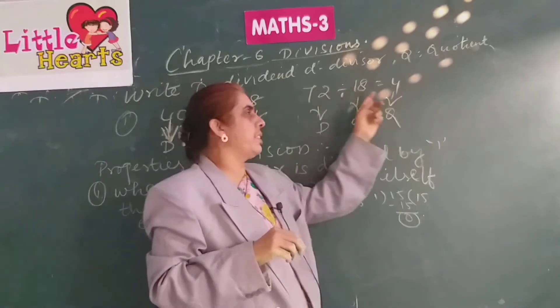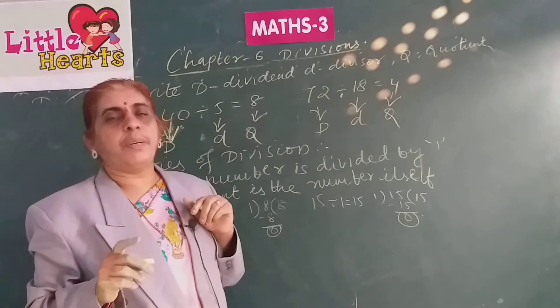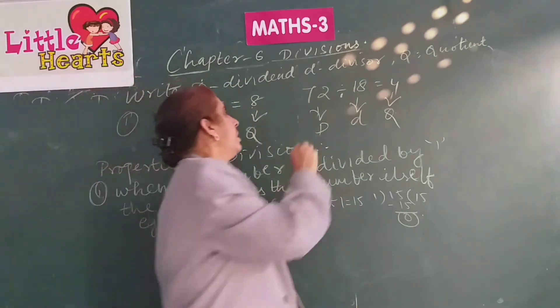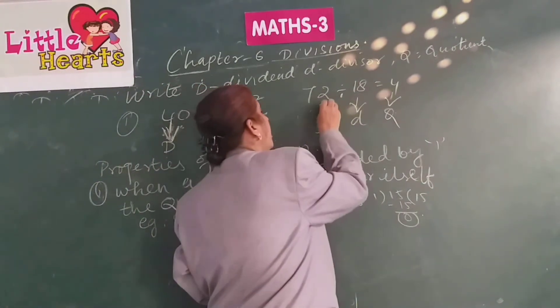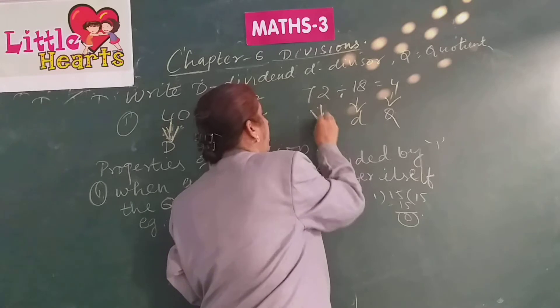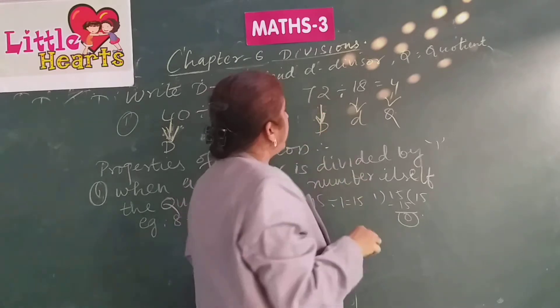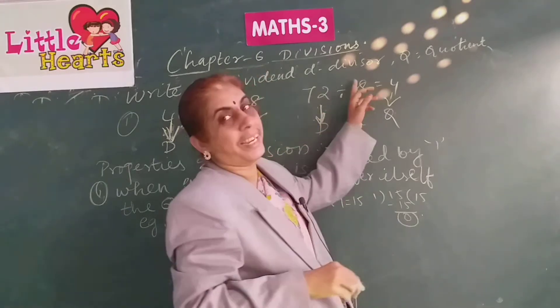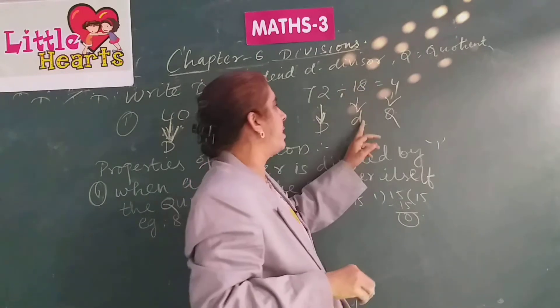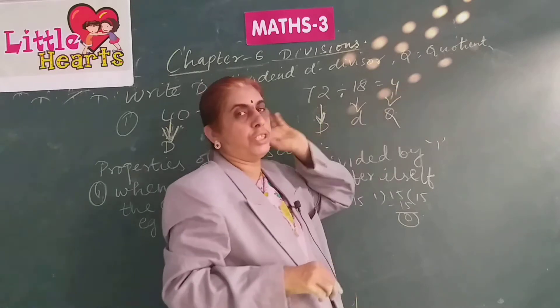72 divided by 18 is equal to 4. What is the dividend here? 72 is the dividend — the biggest number. And what is the divisor? 18 is the divisor, and 4 is the coefficient.